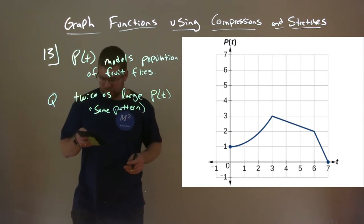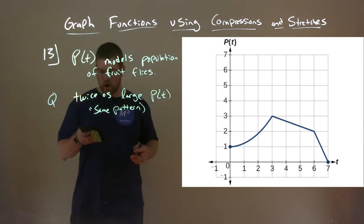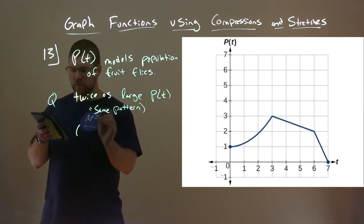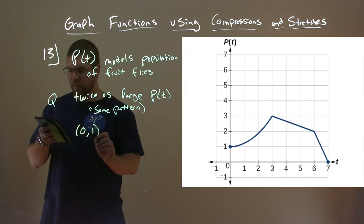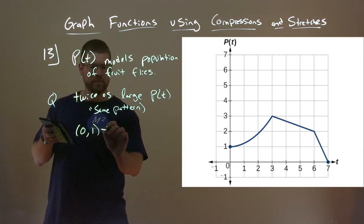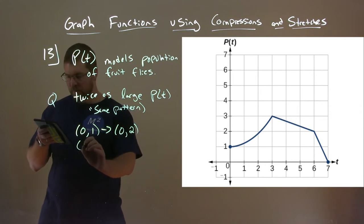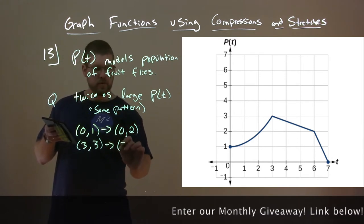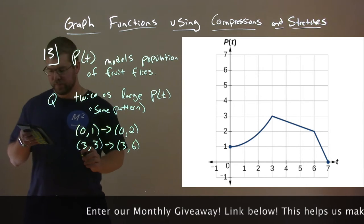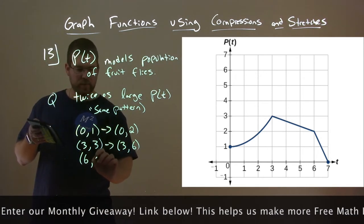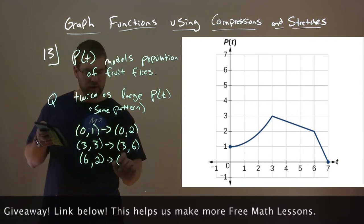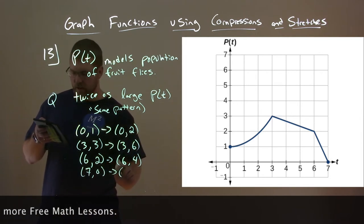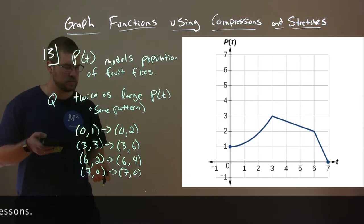Sketch the graph of the population. We're going to take all of the output values and double them. The first point is 0 comma 1 — we double the output to get 0 comma 2. Next point is 3 comma 3 — doubling the output gives us x equals 3, y equals 6. Then input 6, output was 2, so the new output is 4. And lastly, 7 comma 0 — we can't double 0, so it stays 0.